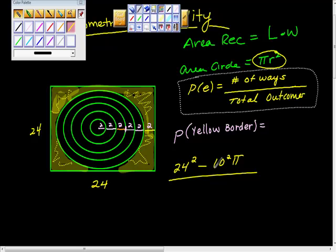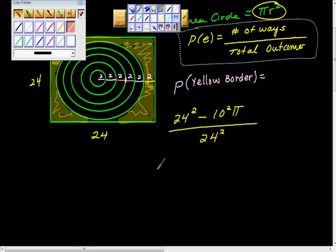Over what? 24 squared. 24 squared is the area of the whole circle. And what is 24 squared?